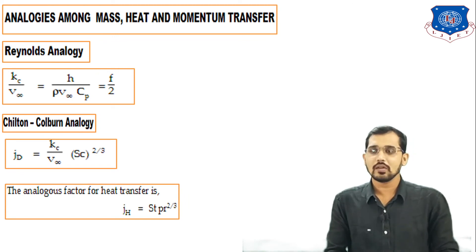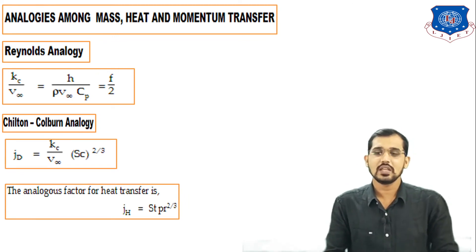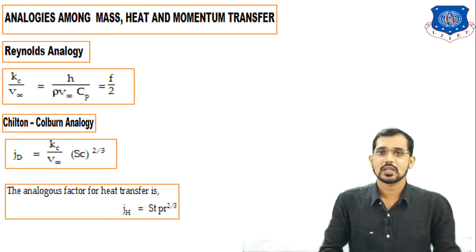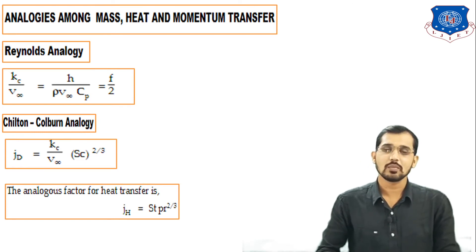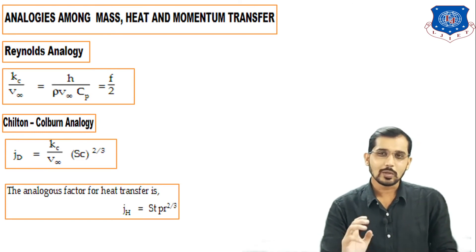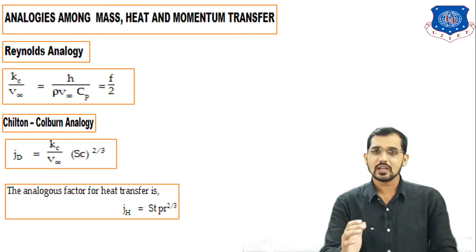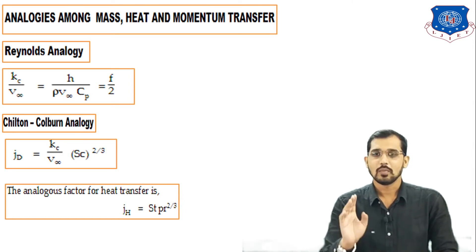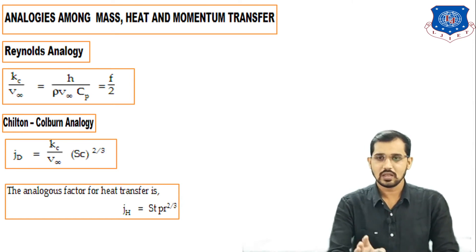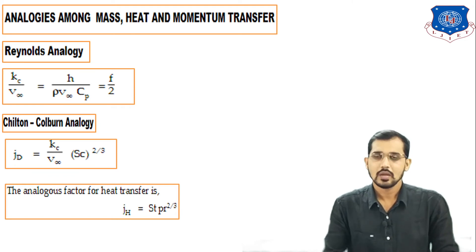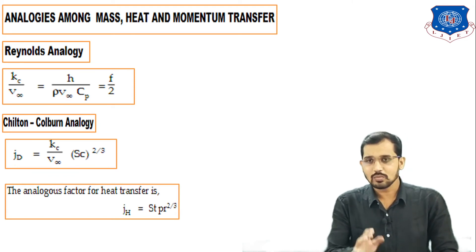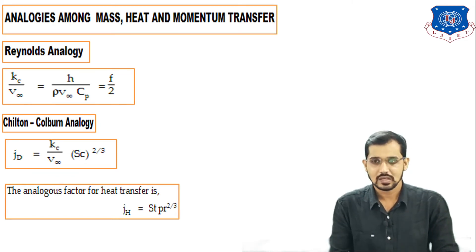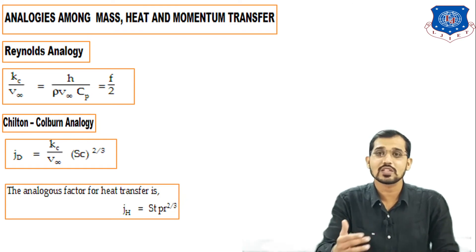Now we are going to see analogies among mass, heat, and momentum transfer. Analogous means similarity, so we are going to see similarities between the three transport processes: mass transfer, heat transfer, and momentum transfer. Until now we have seen relations among the diffusivities; now we will see different analogous behaviors.